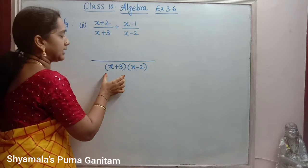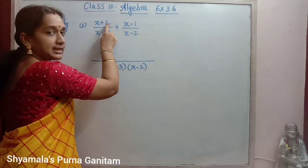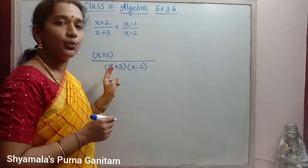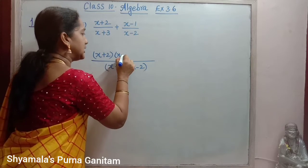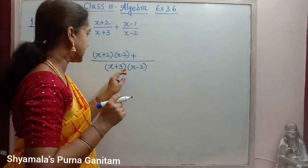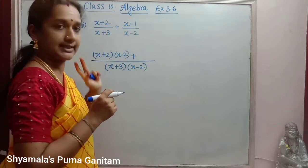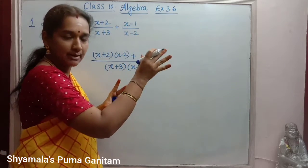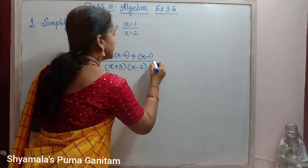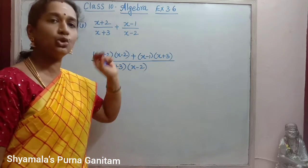So in the denominator we write x plus 3 times x minus 2. For the first term, x plus 3 is already in the denominator, so we multiply the numerator (x+2) by (x minus 2). For the second term, x minus 2 is already there, so we multiply the numerator (x-1) by (x plus 3).